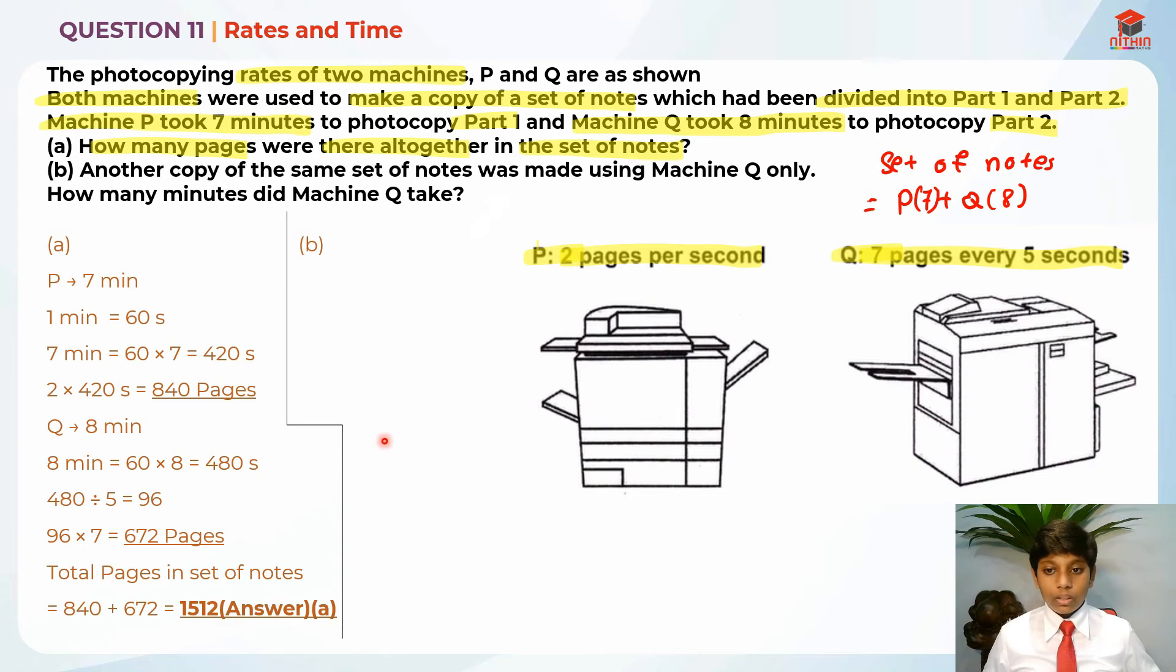Now for part B. Let's read the question first. Another copy of the same set of notes was made using machine Q only. So instead of using machine P, they only use machine Q. So it's the same set of notes, so it has 1512 pages as well. How many minutes did machine Q take?